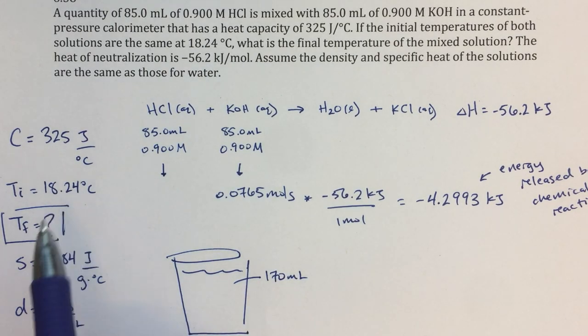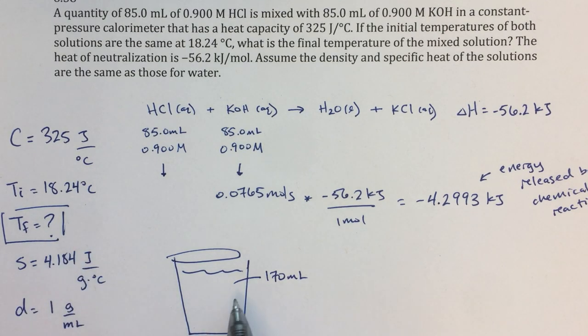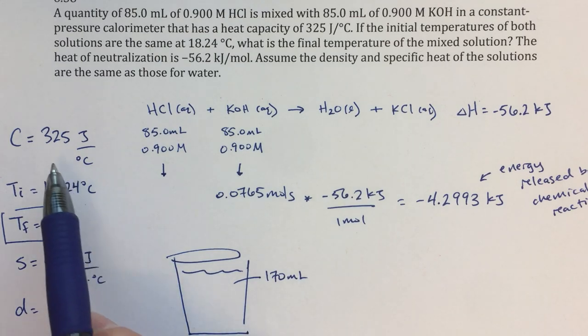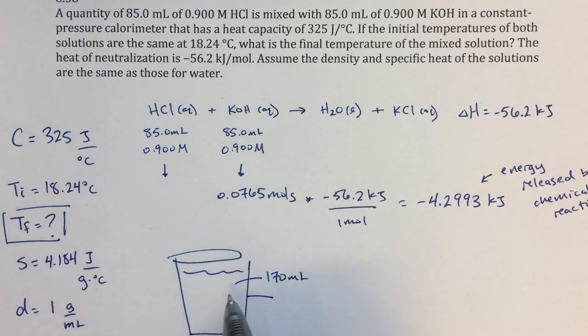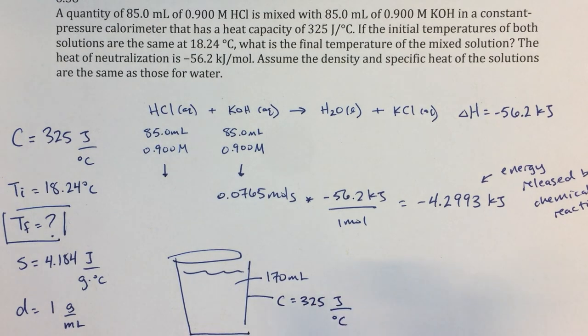The initial temperature is going to be this 18.24 degrees Celsius. The specific heat and density, that's going to be for this solution that I have in my calorimeter. And then this other piece of information, it's really telling us what the heat capacity of the walls of the calorimeter are. So we're going to say that that C equals 325 joules over degrees Celsius. So it's going to take a little bit of energy to heat up the actual walls of the calorimeter as well.